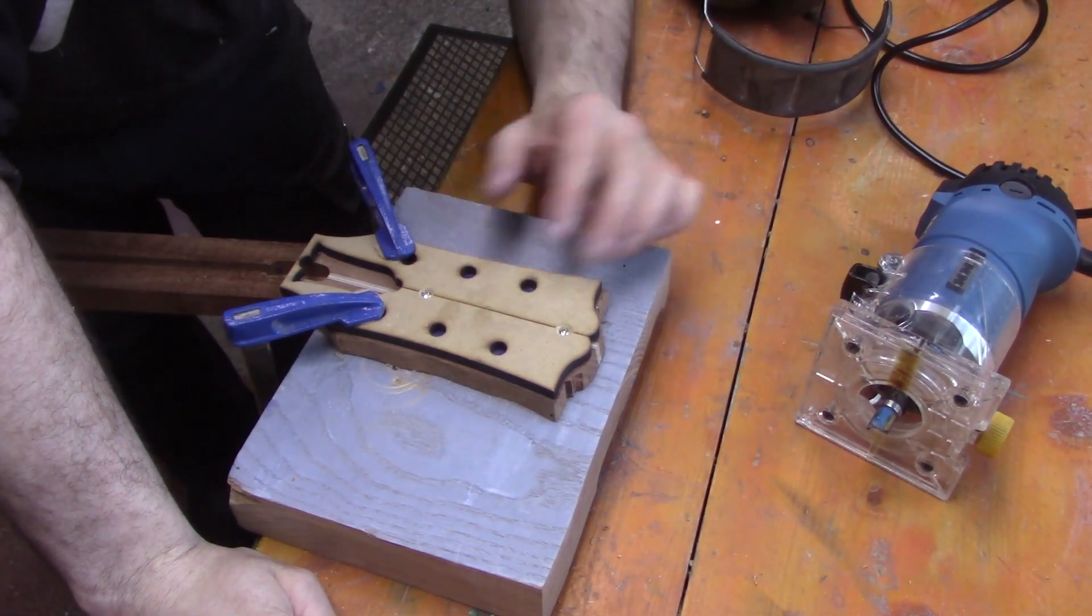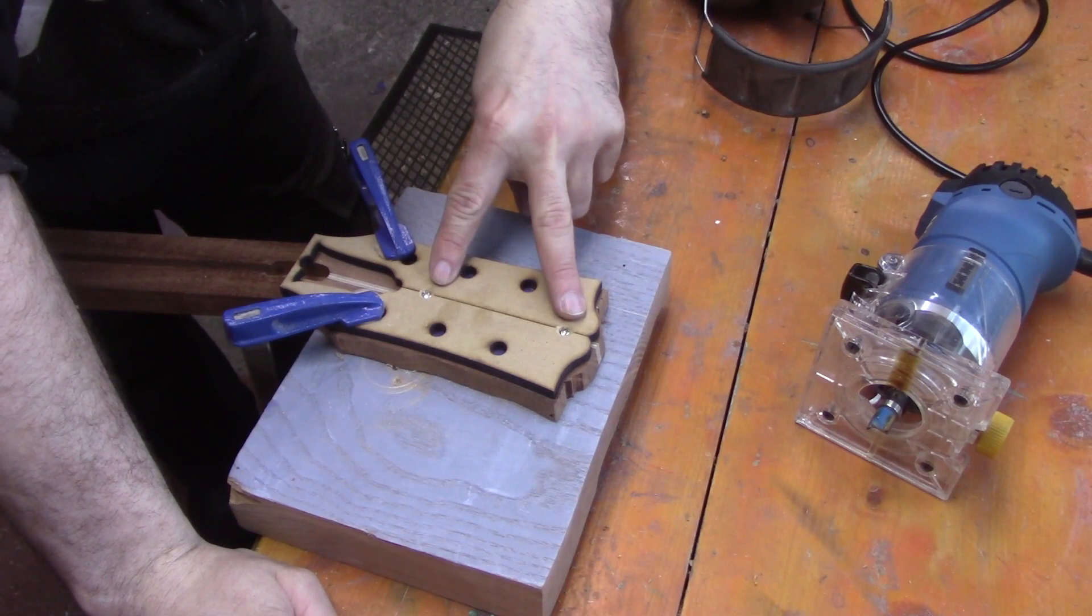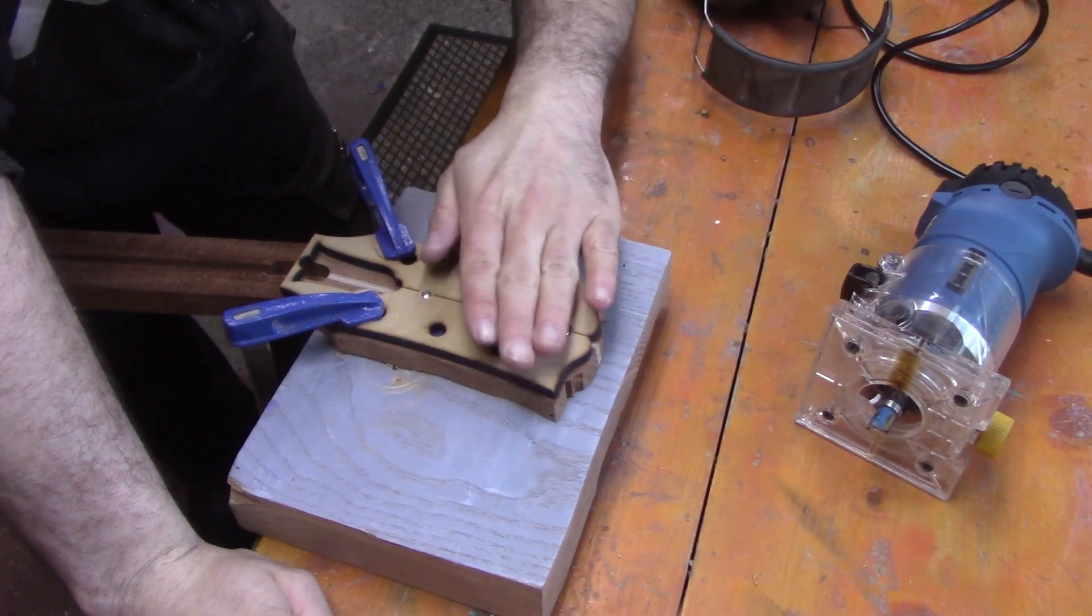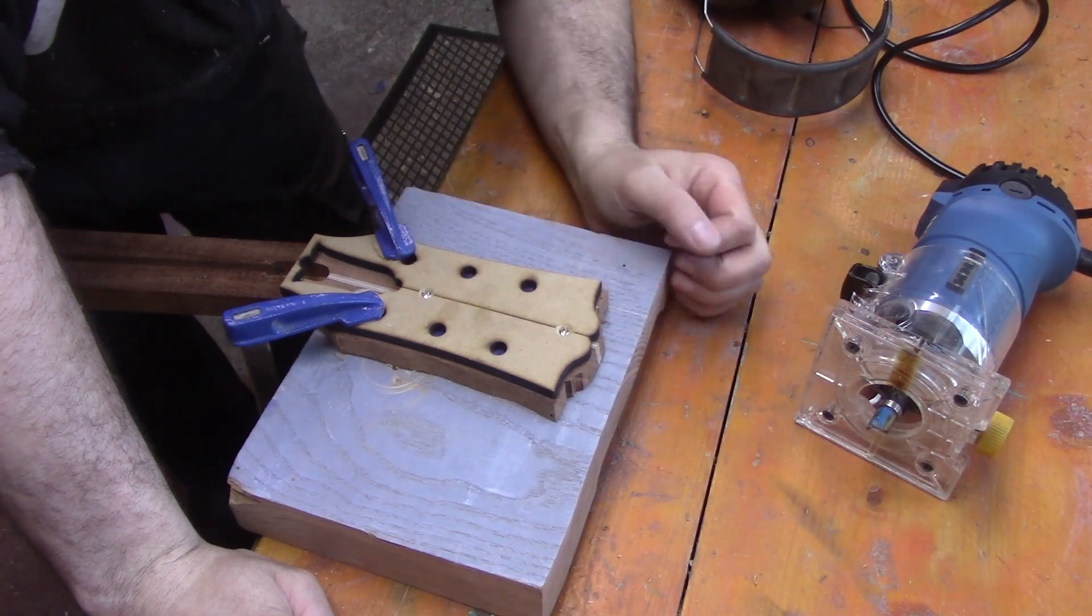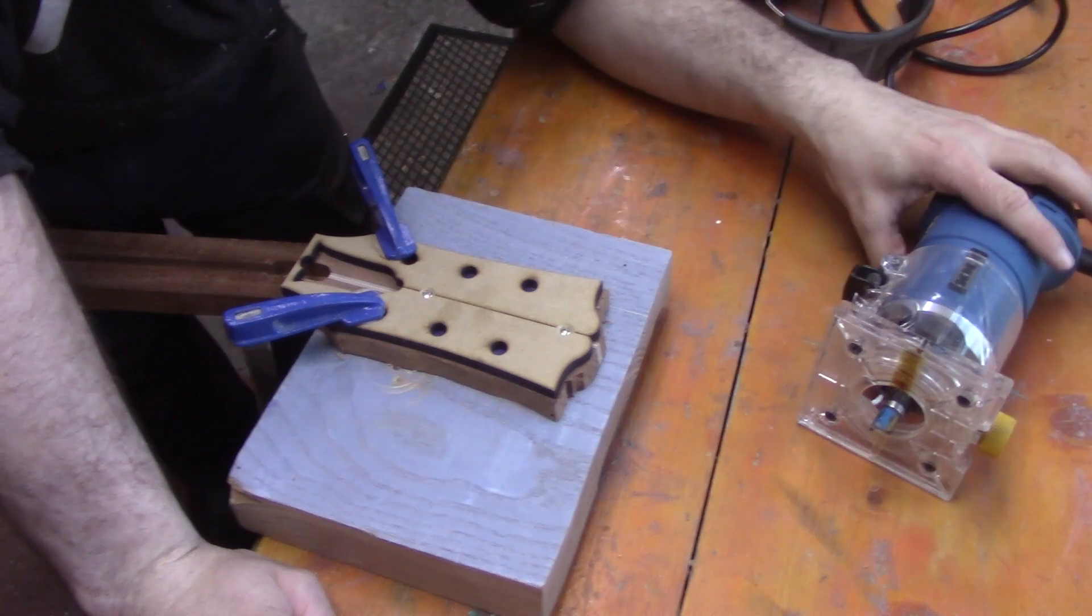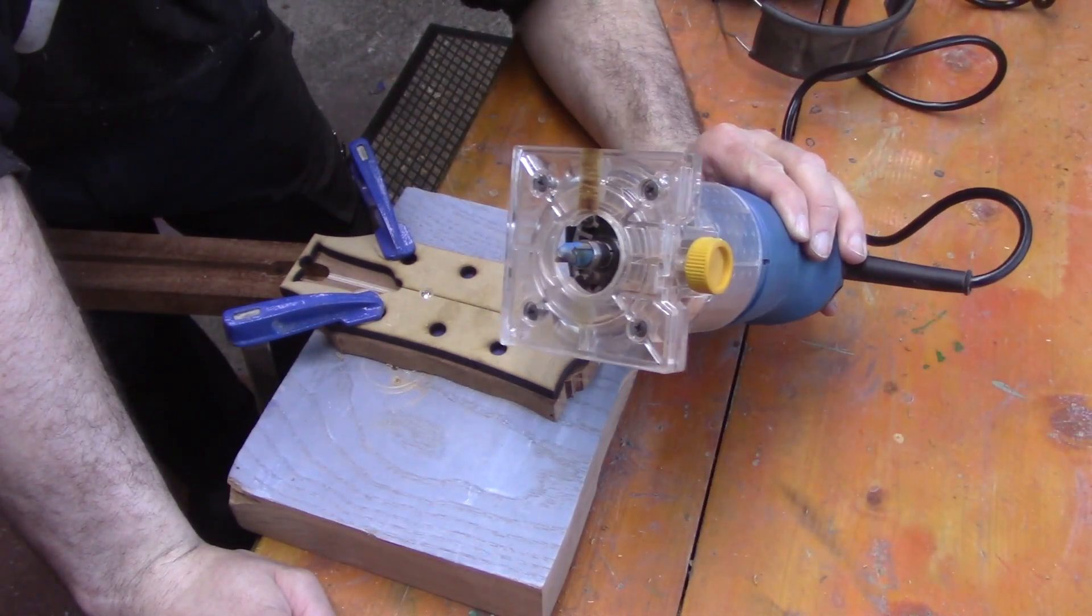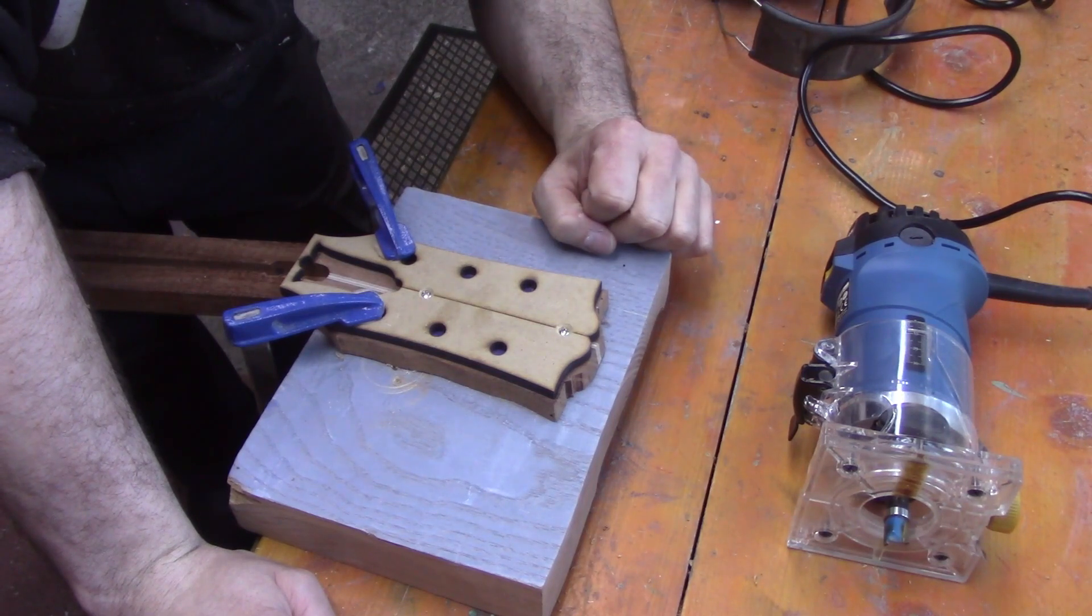We're just doing our headstock shape now. We've got an extra template we've just added here. I'm using two screws to hold it in place because I'll be putting a veneer on the front and back of this headstock, so I'm not worried about seeing any little holes. They can be filled in and the veneer will hide all the mistakes. We're using our laminate trimmer here and we'll put on our PPE now and start routing this up.